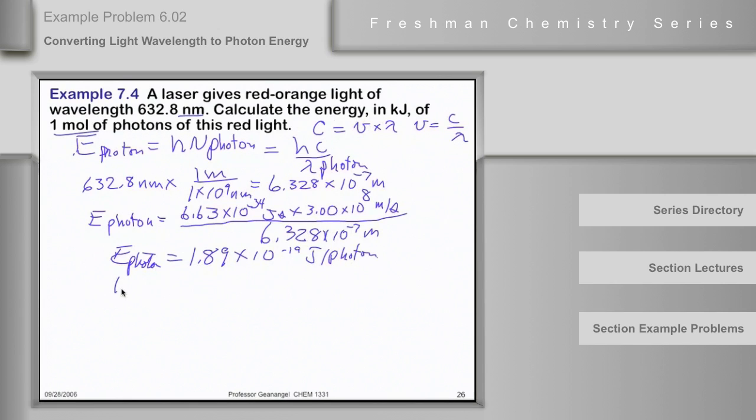Okay. So, last step is 1.89 times 10 to the minus 19 joules per photon times 6.02 times 10 to the 23rd photons per mole. And that's equal to 1.89 times 10 to the 5th joules per mole of photons.